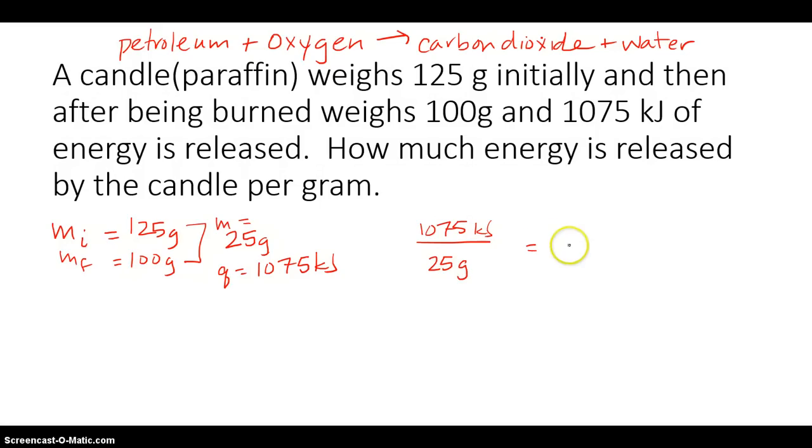How much would be released in one gram? And that leaves us our X. And so when we solve it this way, we simply cross-multiply, and we should get a solution that says 43 kilojoules per gram.